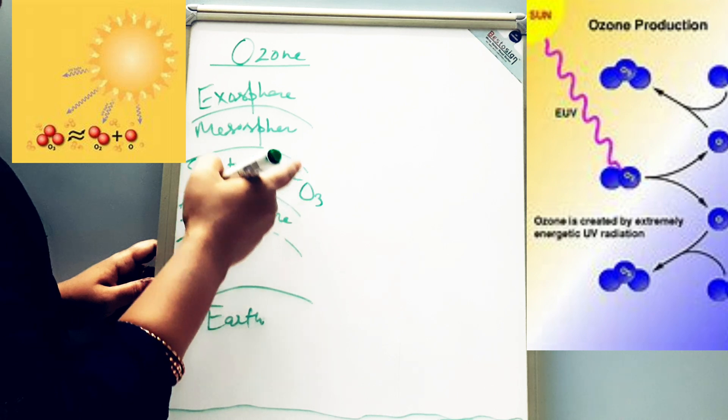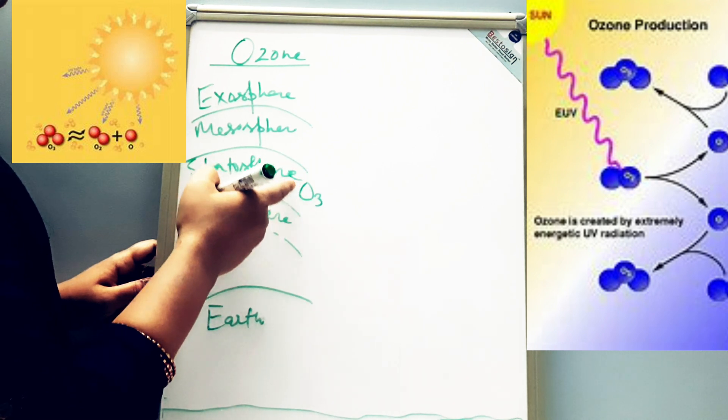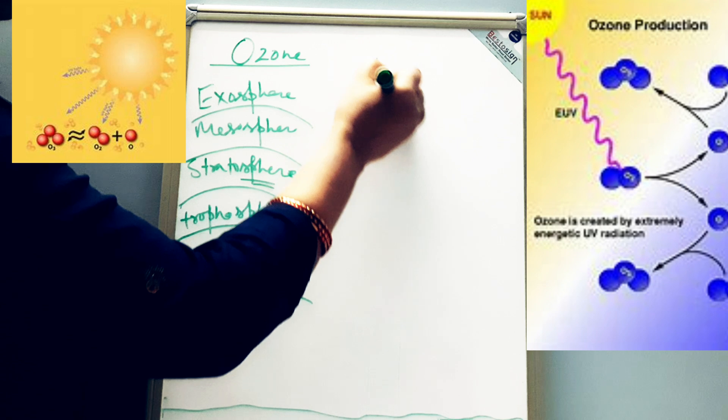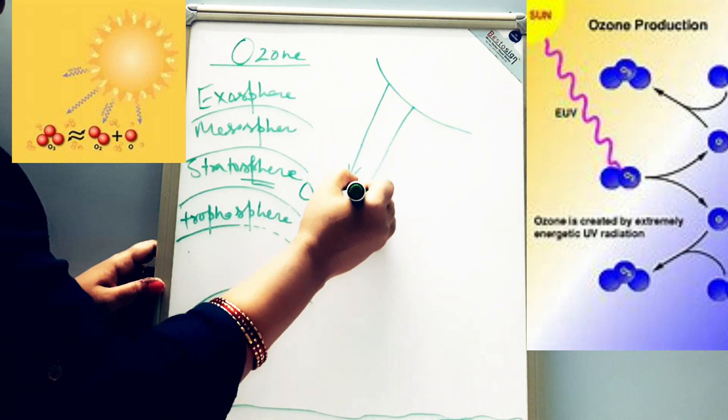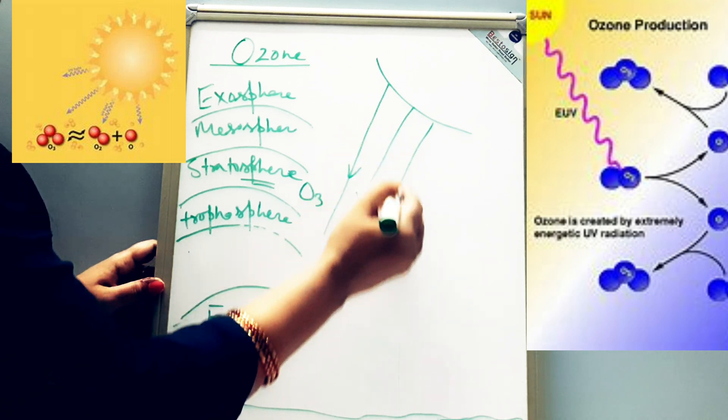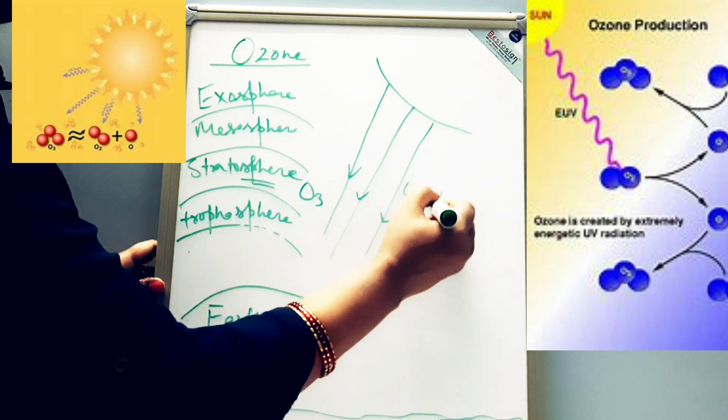Now we'll see how this ozone formed, how this ozone has come here. This is our Sun. Sun rays are reaching towards Earth, and this radiation has UV radiation also.